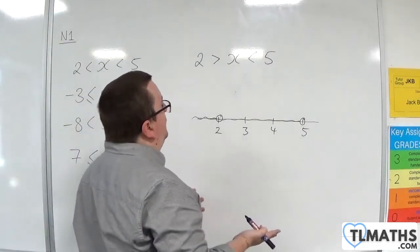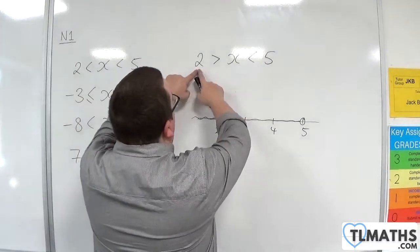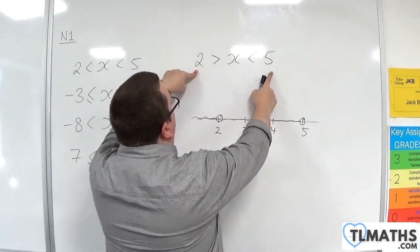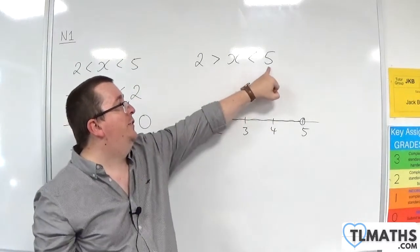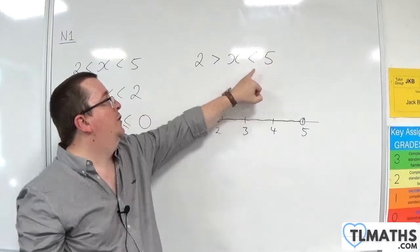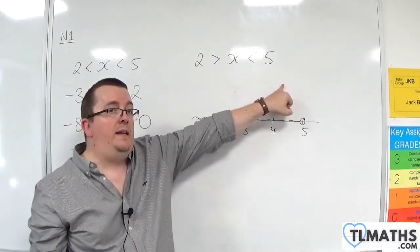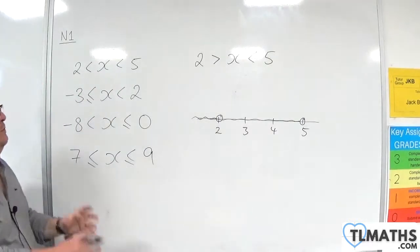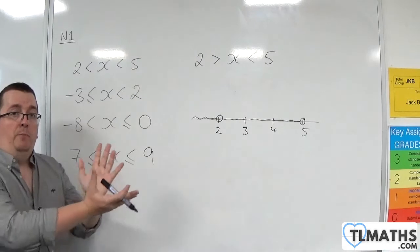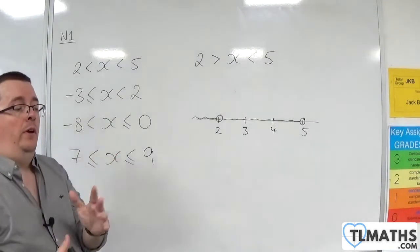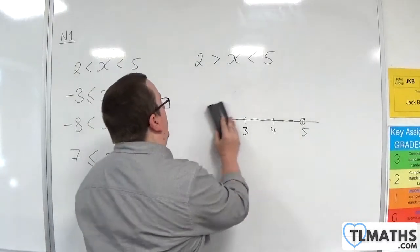But also, there is some ambiguity here. Because are you saying that 2 is greater than 5? You could also say, well, it says 2 is less than 5. But I could also argue it says 2 is greater than 5, which obviously doesn't make any sense. So there is a problem with the symbols being that way around. And it's ambiguous. And consequently, we don't do that either.